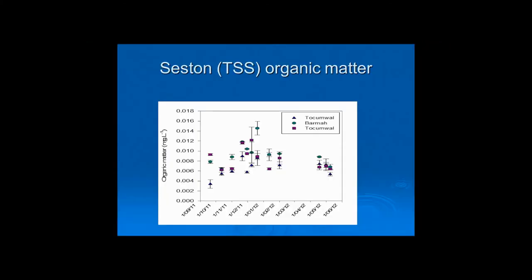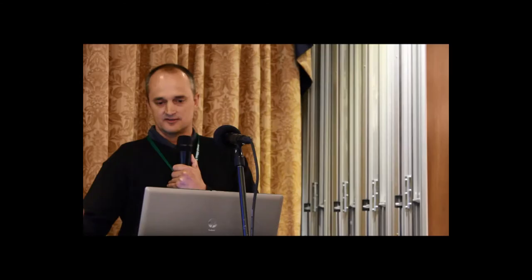Ceston — the food floating down the stream — showing the 2011-12 data only. Again, there's a greater amount of food resource downstream of the forest, and once floodplain connection has ceased, the amount of food becomes similar.